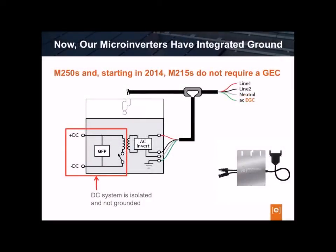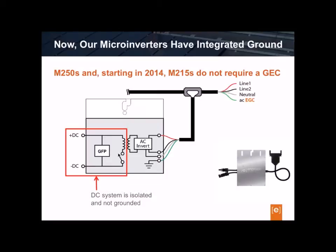Now all Enphase microinverters manufactured for use in North America feature integrated ground. By isolating the DC circuit, solar installers can build ungrounded photovoltaic arrays in accordance with NEC 690.35. Enphase microinverters with integrated ground can detect ground faults on either the DC positive or negative conductor of the PV module. Also new to these microinverters is the insulation monitor, or IM, which measures the insulation resistance of the DC circuit. These features offer greater safety than previously possible and allow for the removal of the separate GEC required for previous generation microinverters.